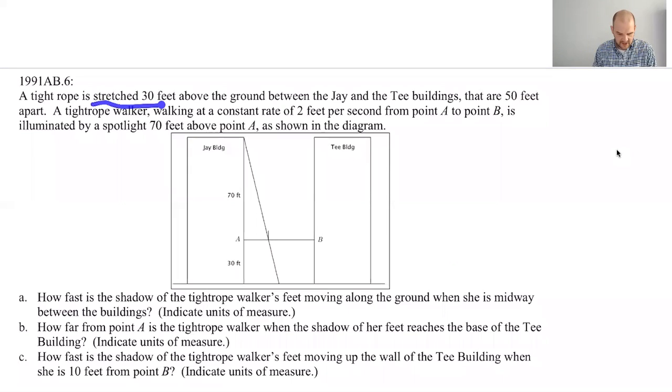So let's see if we can make sense of it. A tightrope is stretched across 30 feet above the ground between the J and T buildings that are 50 feet apart. So J building, T building, 30 feet above the ground, and they're 50 feet apart, so this distance is 50.